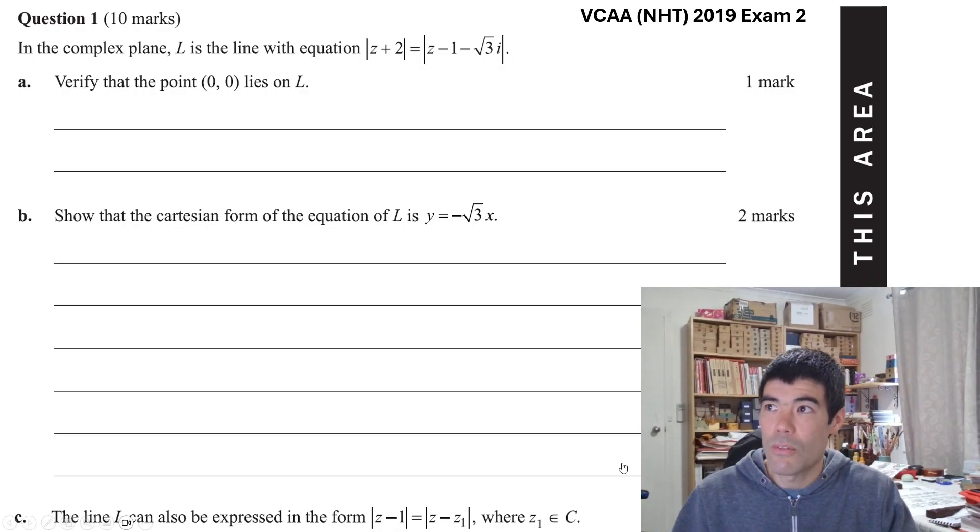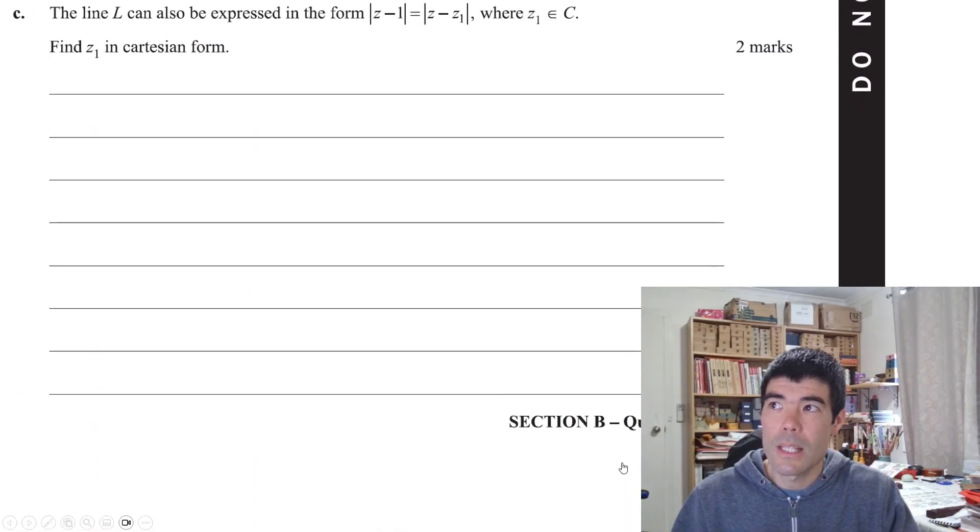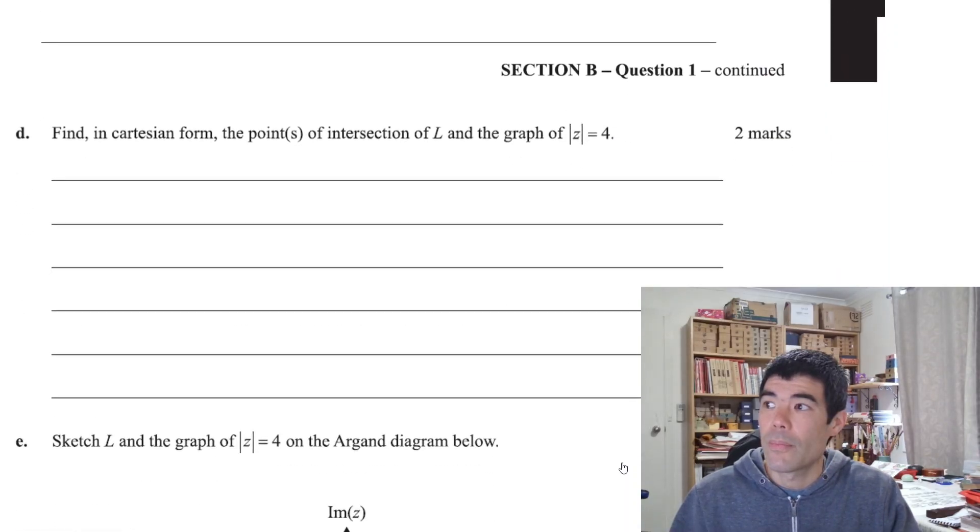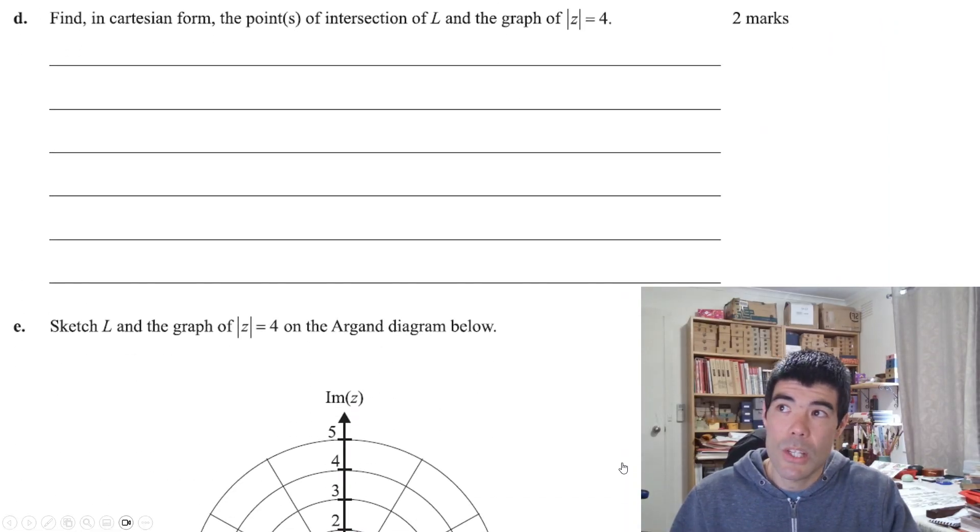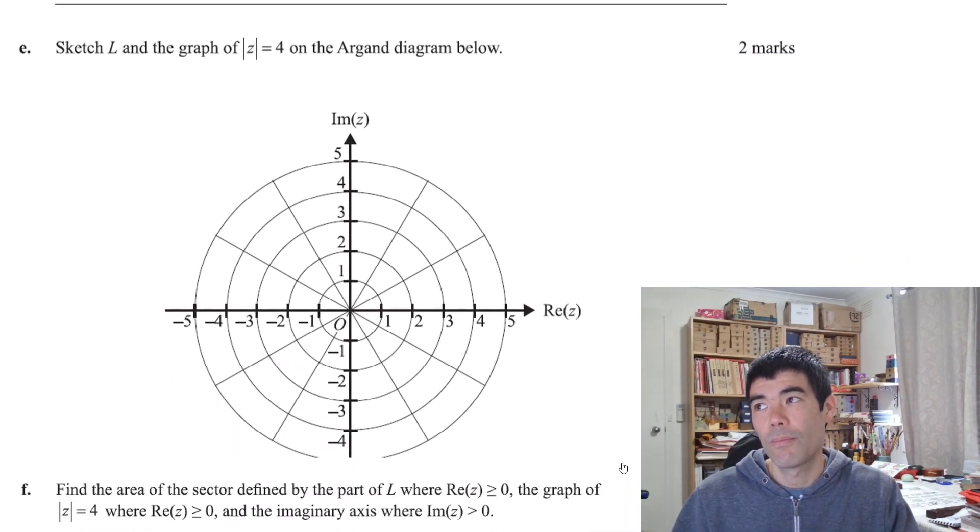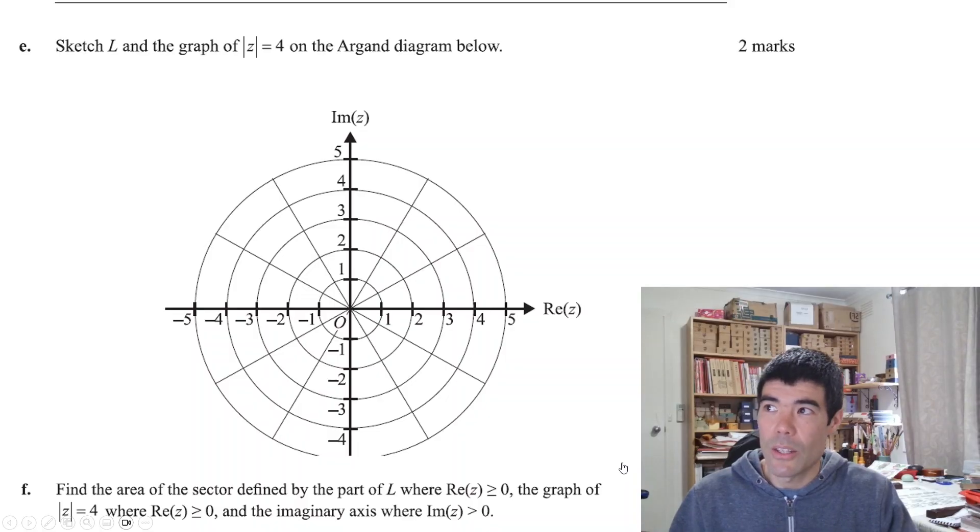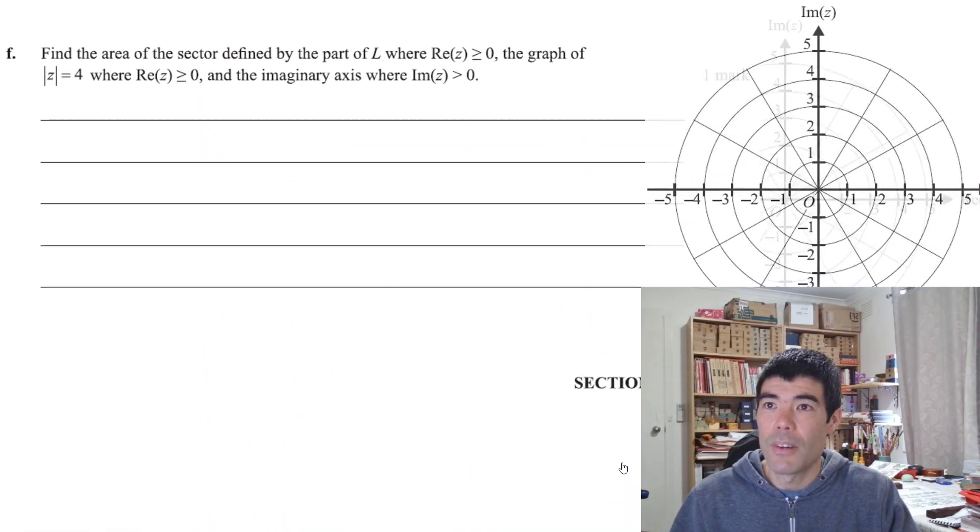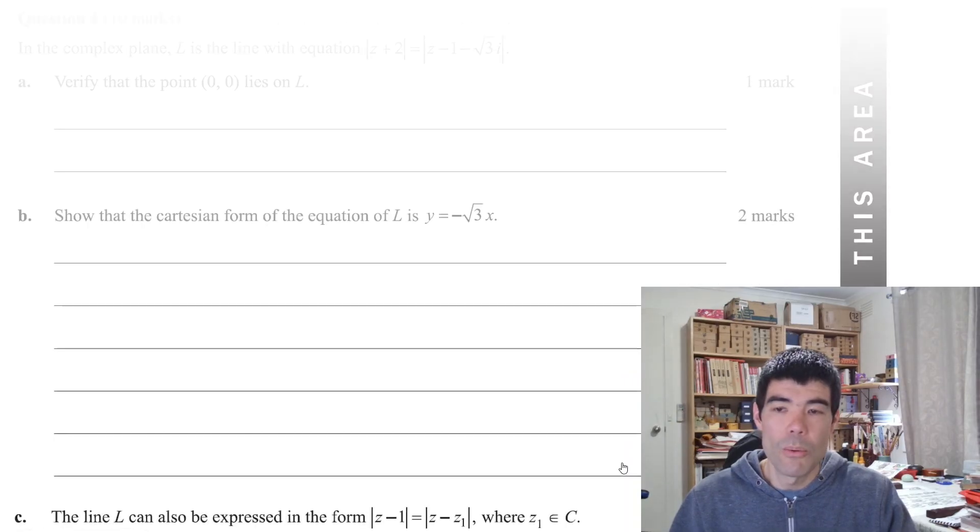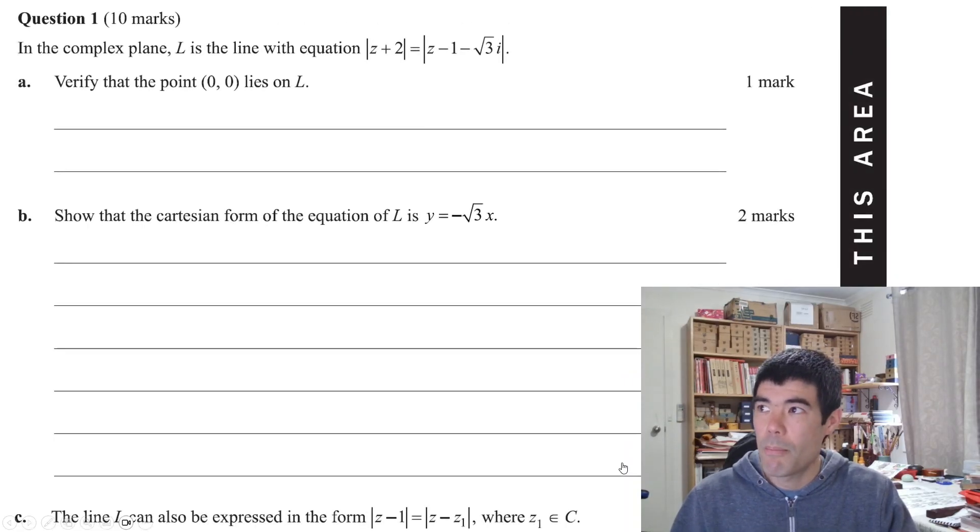So we'll just read through the question first. We have a line in the complex plane. We want to verify that the point (0,0) lies on this line. Show the Cartesian equation of the line. We've also got this one is a little bit different. The line L can also be expressed in this form. Find z1. Then find the points of intersection of the line L with the graph |z| = 4. Sketch the line L and the graph |z| = 4. And then finally, find the area of a sector. We'll work through step by step. Feel free to pause the video between each part and have a go yourself first.